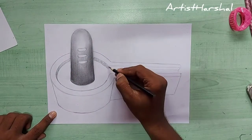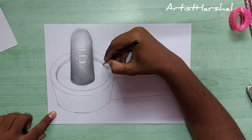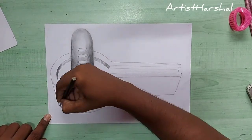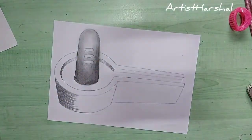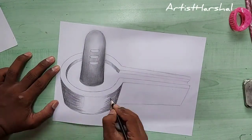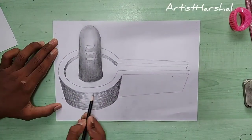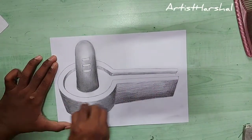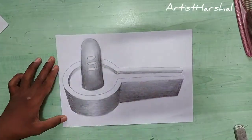So subscribe to our channel, you will definitely get good tutorial videos in Hindi and English language also. This art form is also called anamorphic art. This is a 3D illusion art, sometimes also known as optical illusion art.